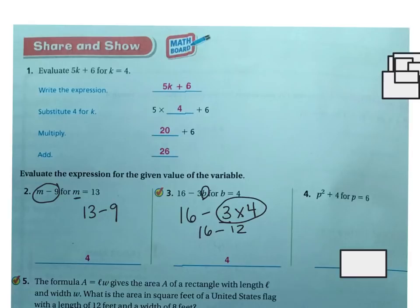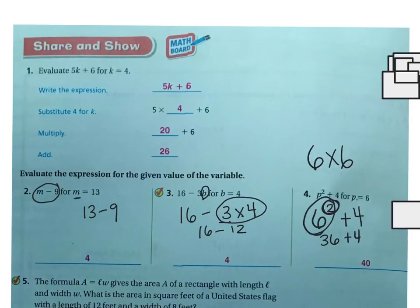I'm going to do this next one because it has an exponent. We have P to the second power plus 4, and P equals 6. So there's my 6 with the exponent 2, plus 4. I do my exponents first. This is saying the base is 6, and I'm multiplying it 2 times. It's not 6 times 2, it's 6 times 6, which is 36 plus 4, and 36 plus 4 is 40.